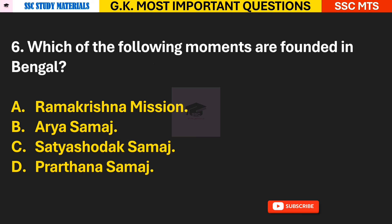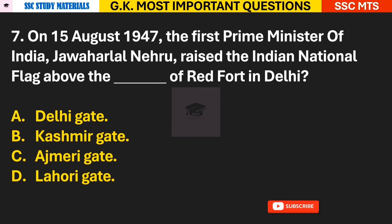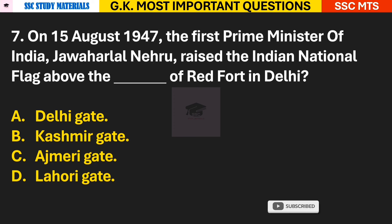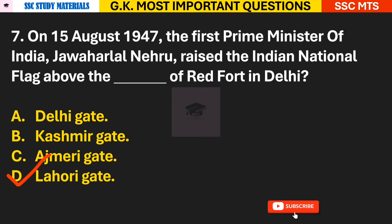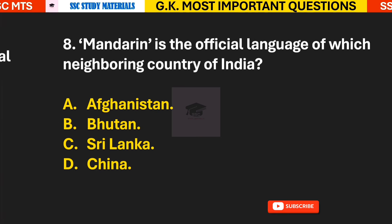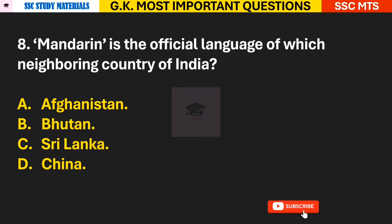Answer to Q6: A — Ram Krishna Mission was founded in Bengal. Question 7: On 15 August 1947, the first Prime Minister of India, Jawaharlal Nehru, raised the Indian National Flag above which gate of Red Fort in Delhi? The answer is D — it was the Lahori Gate of Red Fort in Delhi.